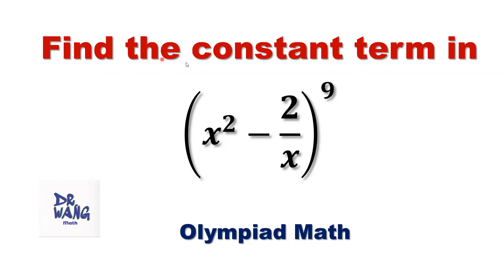Find the constant term in the expansion of x squared minus 2 over x, then to the power of 9.